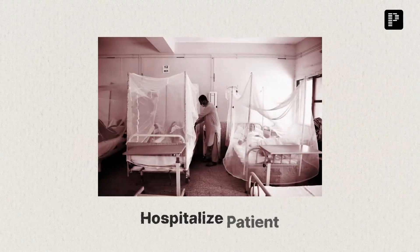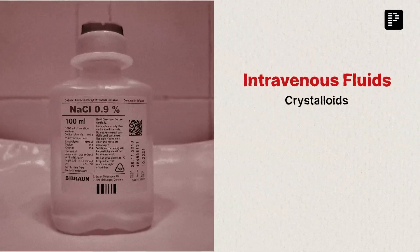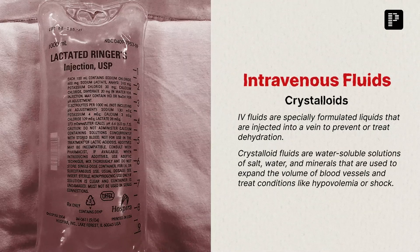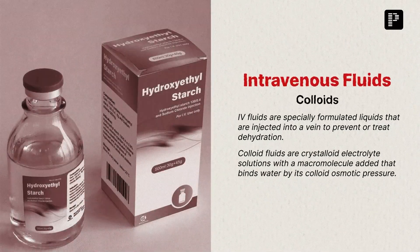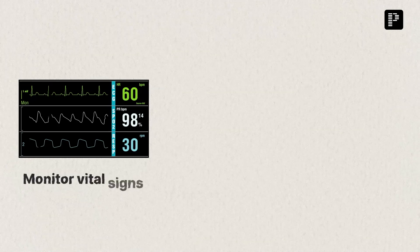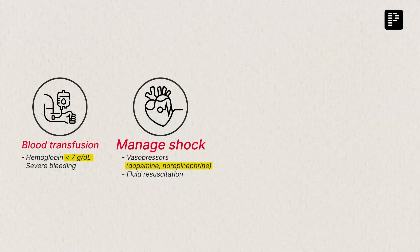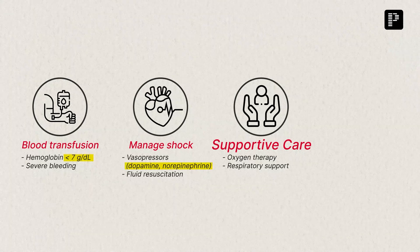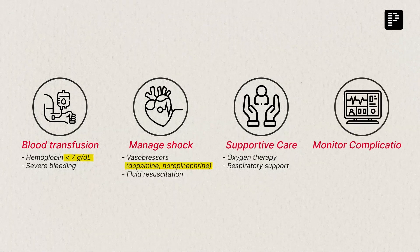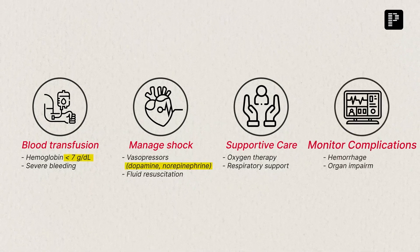For moderate to severe Dengue, hospitalization is required. Use crystalloids like normal saline or Ringer's lactate. For severe plasma leakage, use colloids like dextran or starch. Closely monitor vital signs, platelet count, and hematocrit. Blood transfusion is recommended if hemoglobin drops below 7g per deciliter or if there is severe bleeding. In cases of shock, use vasopressors like dopamine or norepinephrine along with continuous fluid resuscitation. Provide supportive care like oxygen therapy and respiratory support if needed, and constantly monitor for complications such as hemorrhage and organ impairment.